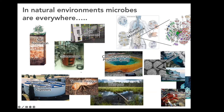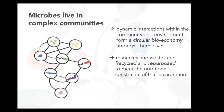Within natural environments, microbes exist everywhere and are involved in many processes — from soil formation, to the colors in the Grand Prismatic Spring at Yellowstone, to cloud formation, to the formation of the White Cliffs of Dover. They live in deep sea tube worms, are found in wetlands, and we also use them in bioreactors and anaerobic digestion. Within these natural environments, microbes live in really complex communities and carry out dynamic interactions to form a kind of circular bioeconomy amongst themselves.